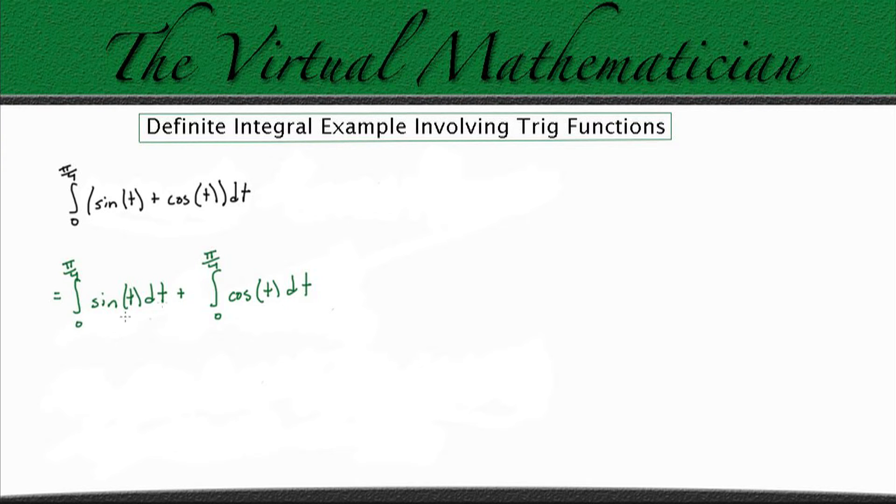Alright, so let's integrate this one first. So we know that the integral of sine is negative cosine. So we're going to get negative cosine of t evaluated from 0 to pi over 4 plus this integral.